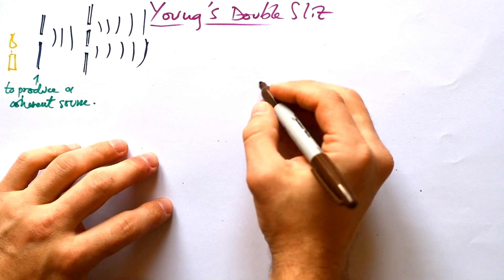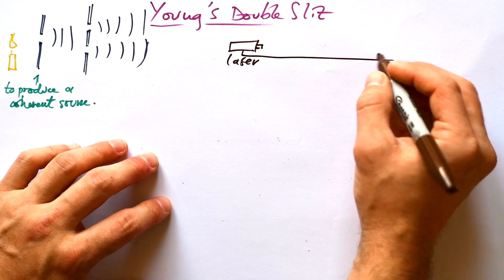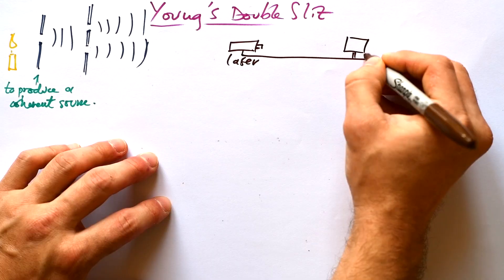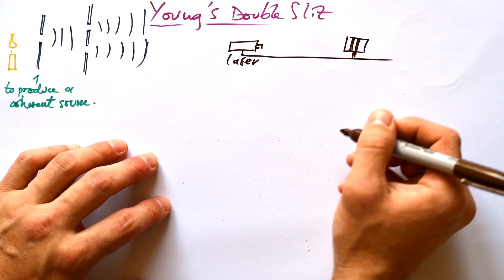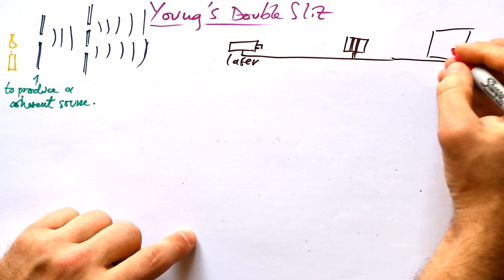But of course nowadays we have lasers and that might be attached to an optical bench or something like that and then we have our double slit slide there and then we have our screen where we have our diffraction pattern created.